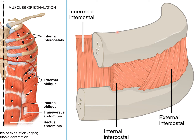On the diagram to the right, you can see the position of the different intercostals between two ribs. The external intercostals are more superficial than the internal intercostals.